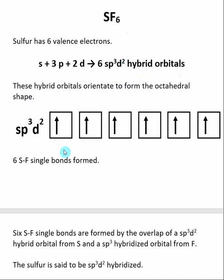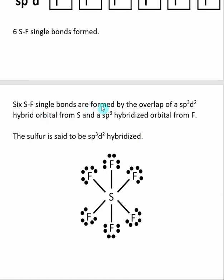These hybrid orbitals are all equivalent, and when we put the 6 valence electrons into them, we end up with 6 unpaired electrons. These are going to form 6 sulfur-fluorine single bonds. Those bonds are formed by the overlap of a sp3d2 hybrid orbital from sulfur and an sp3 hybridized orbital from fluorine. So the fluorines have 4 electron groups, so they are sp3 hybridized.